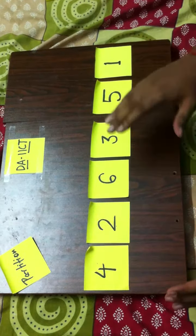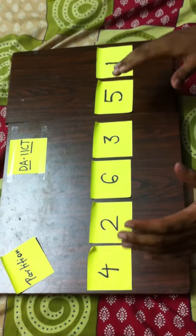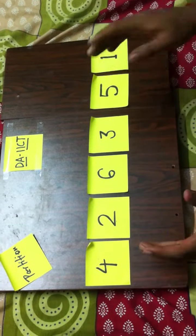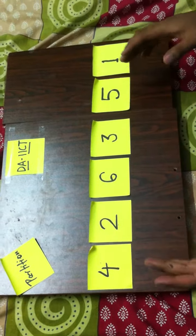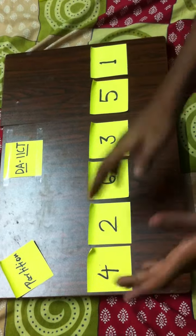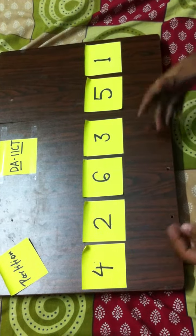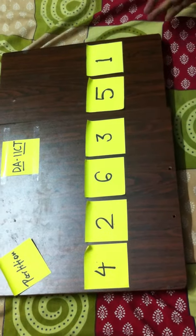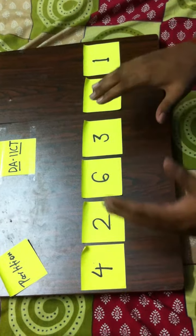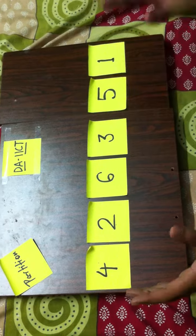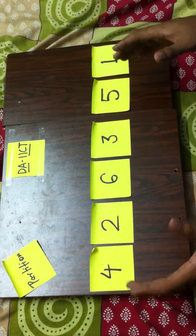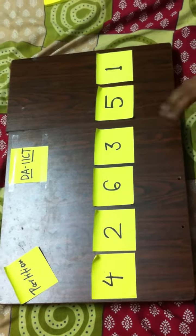We are going to start partition. Partition has a very large application in quicksort. Quicksort is basically based on partition, which is very quick — that's why its name is quicksort. We are going to show the first method of how to do partition.